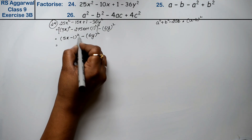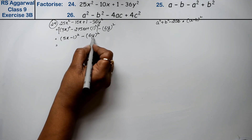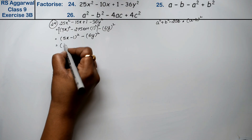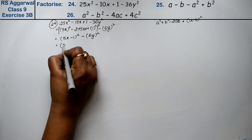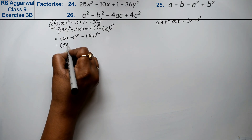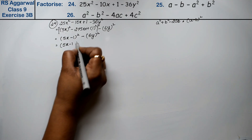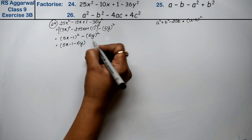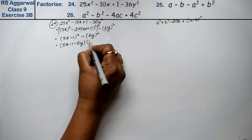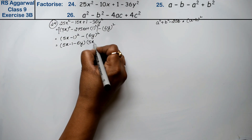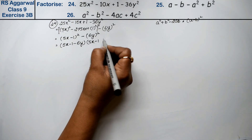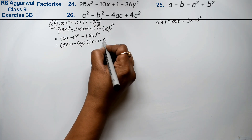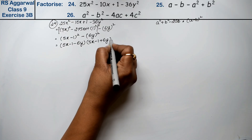Now we apply the formula a² - b², which factors as (a + b)(a - b). So (5x - 1)² minus (6y)² becomes (5x - 1 + 6y)(5x - 1 - 6y). That is the answer for question 24.